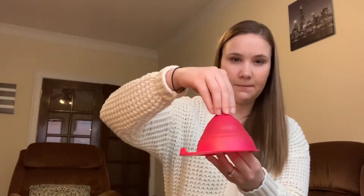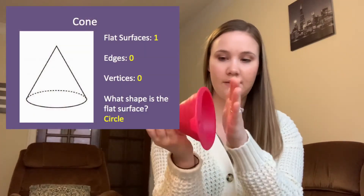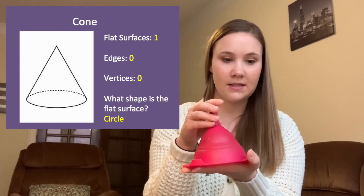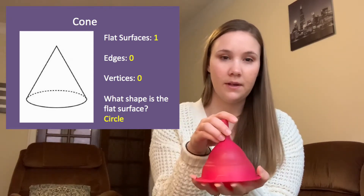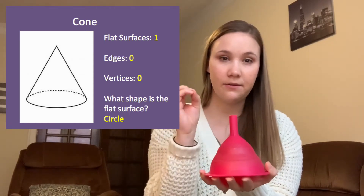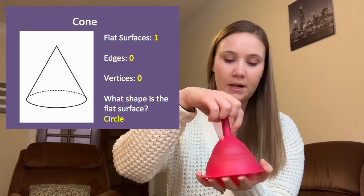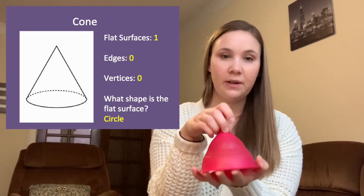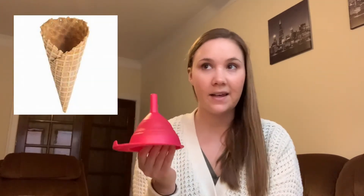Let's look at a cone. We're going to pretend the top point is not there and the bottom is covered. On a cone, how many flat surfaces are there? If you said one, that is correct — the bottom is considered a flat surface. A cone has zero edges and zero vertices, because a vertex only counts when two edges meet. Real-life examples of cones include an ice cream cone, a traffic cone, and a birthday hat.